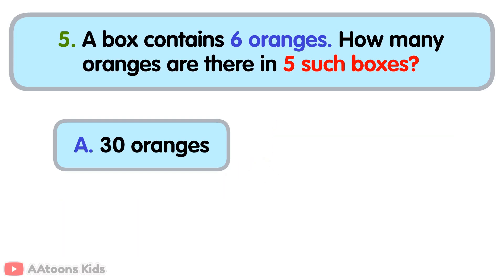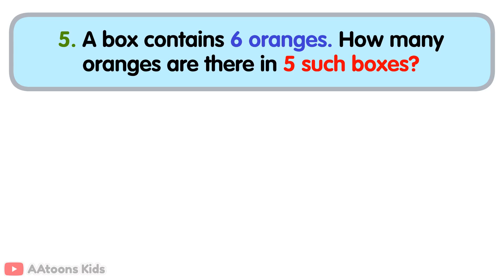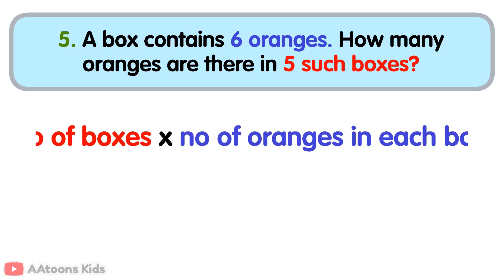Thirty oranges. To find the total number of oranges, multiply the number of boxes by the number of oranges in each box. Total number of oranges in each box is six. Now, five multiplied by six is thirty. So, there are thirty oranges in total.